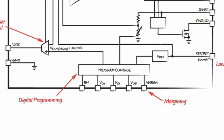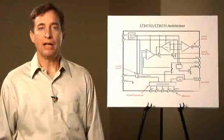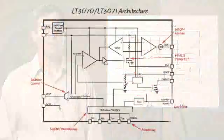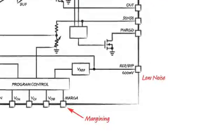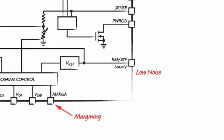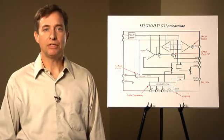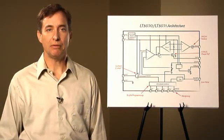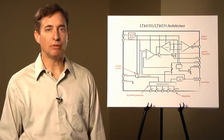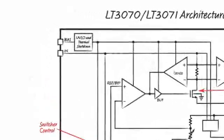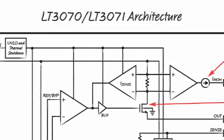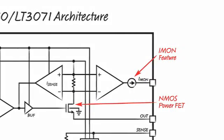The LT3070 offers digital output voltage margining, while the LT3071 offers analog output voltage margining. They have low output noise, 25 microvolts RMS typical. They offer a switcher control feature that I will be covering in a moment. They deliver high efficiency and high power supply rejection with only 300 millivolts of V-in to V-out headroom. The LT3070 also offers a current monitor feature that is ideal for system power analysis.